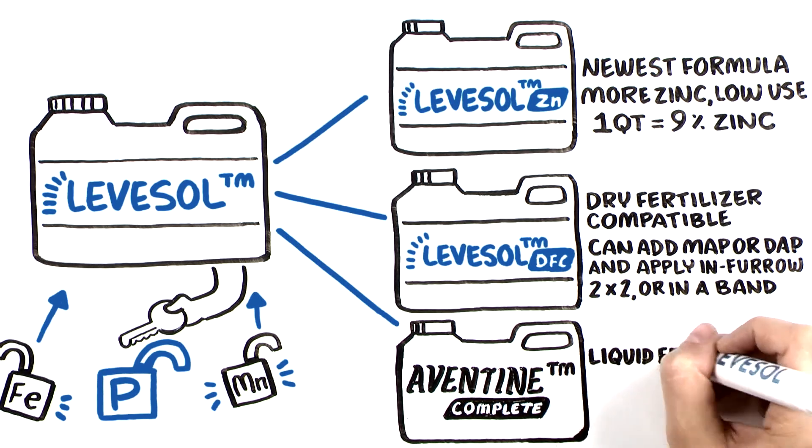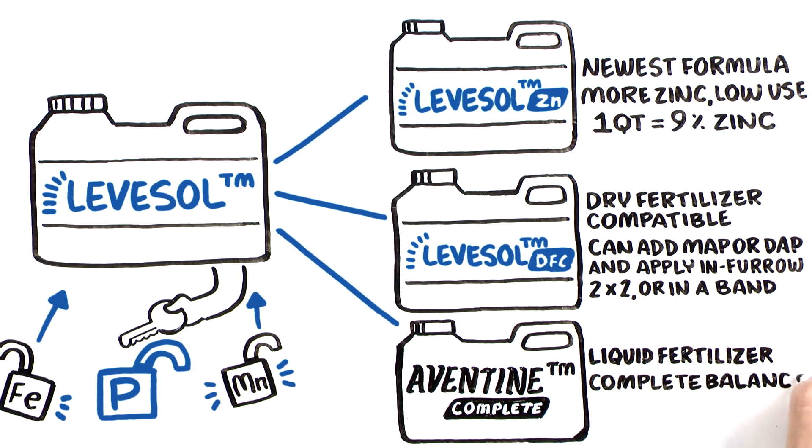CHS Aventine Complete is a liquid fertilizer with Levisol and a complete balance of micro and macronutrients.